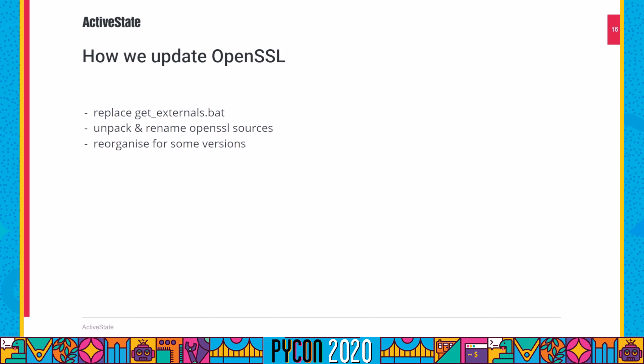We had an urgent need to be able to at least replace OpenSSL for our Python builds on a more frequent basis. In order to do this, we patch every version of the Python core with a replacement getExternals.bat, which downloads all the dependencies from the same cloud storage we use for all our other cached source code. For OpenSSL, we download the version we need for our runtime and extract it into the same directory that the Python Visual C++ project expects it to be in, including the old version number. The build system then finds a newer version of OpenSSL to build in the directory it assumes is for the older version — for example, we may have unpacked version 1.0.2t in place of 1.0.2p. For some versions of OpenSSL, this also means reorganizing the source tree to match what the Visual C++ project expects.